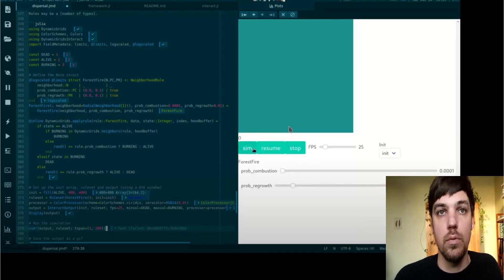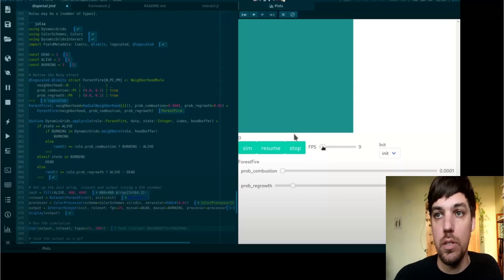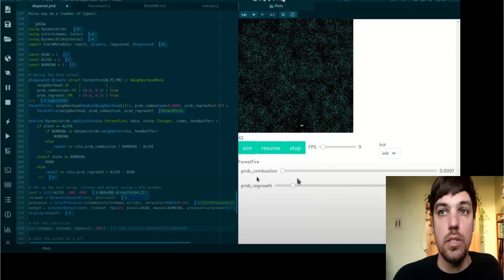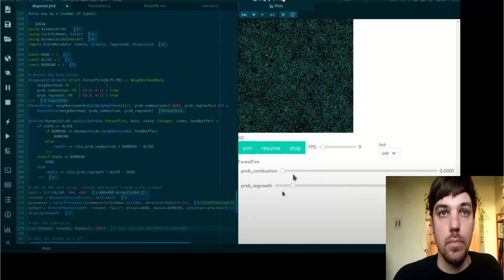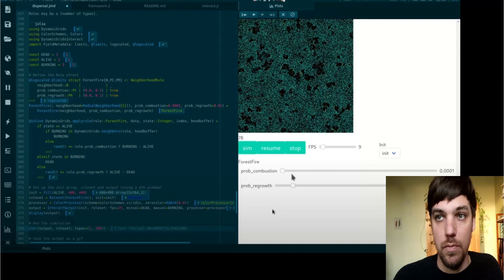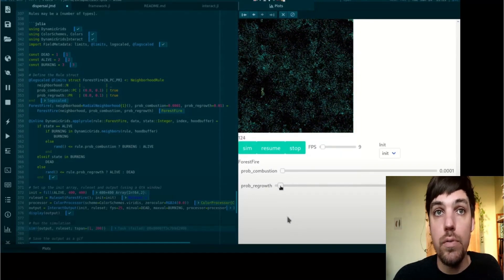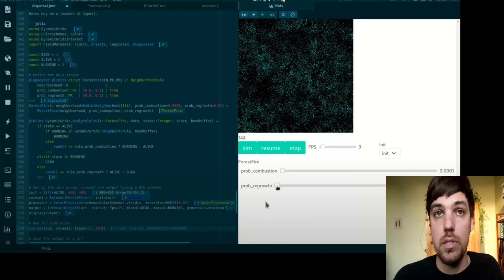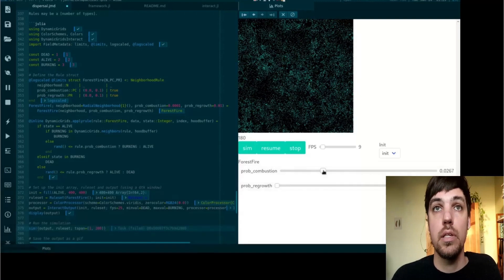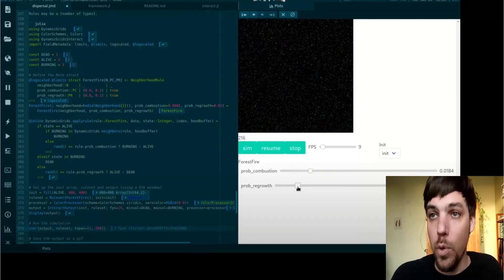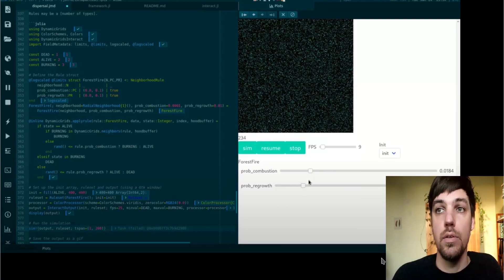Here you can see in the plot pane, we have buttons to run the simulation and change the frame rate. But we also have sliders to change the parameters of the formulation. We can change the probability of regrowth, the probability of combustion as the simulation is running. You should see changes in the dynamics as we move these sliders. That will work for any model that you pass in, not just this model.